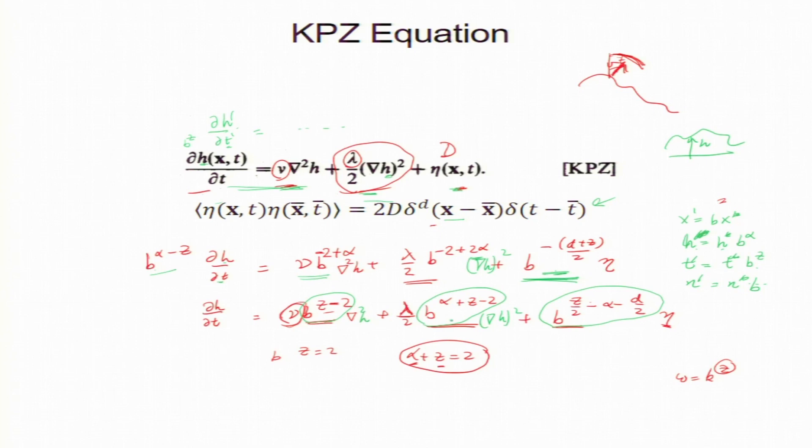So, from here, I can see that. So, the exponent of b should be 0. So, that gives you alpha plus z equal to 2 from here. This one gives you alpha plus z equal to 2.